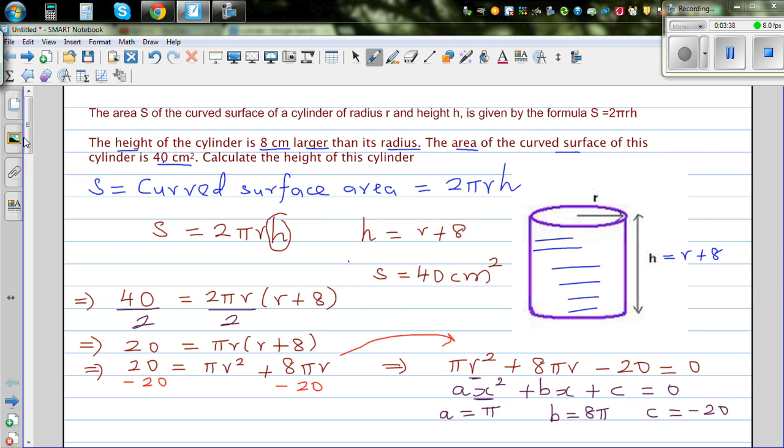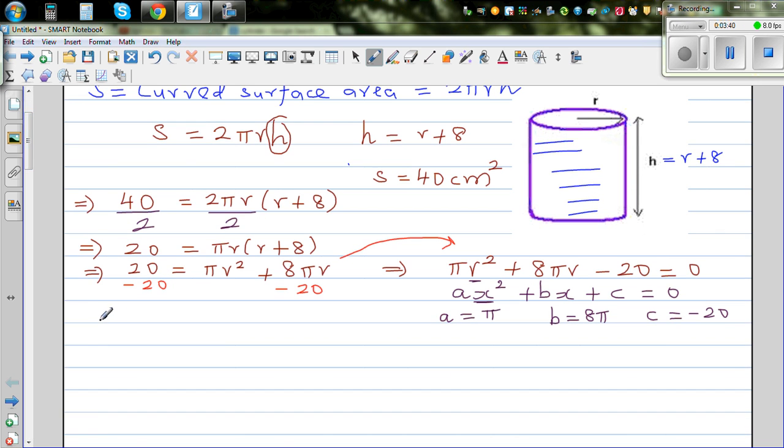If you're not allowed to use a graphic calculator, you can use the quadratic formula, which is x equals minus b plus or minus square root of b² minus 4ac over 2a. You can substitute the values of a, b, and c into this and get the value of x. But if you have a graphic calculator, this is a very tedious calculation.